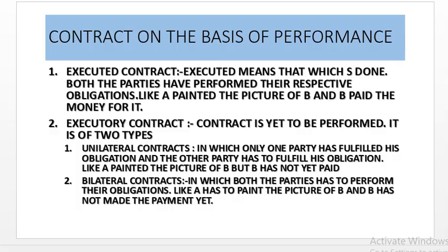Contract on the basis of performance. Executed contract — executed means which is done; both parties have performed their respective obligations. Like A painted the picture of B and B paid the money for it — no obligation remains. Both parties have performed their respective parts.